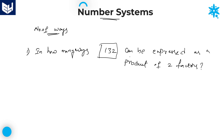Sometimes, if perfect squares are given, there is a chance of asking 'as a product of two different factors' also. So you must be aware of that particular statement. Whenever perfect squares are given, you must be in a position to observe this particular statement carefully — whether it says 'as a product of two factors' or 'as a product of two different factors.' When we are getting an odd number of factors for any perfect square, there are two cases.